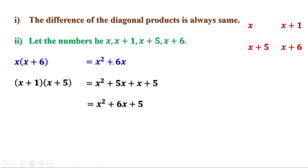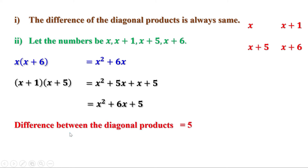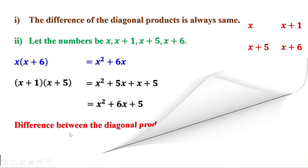Now look at these two expressions. This is x square plus 6x. This is x square plus 6x plus 5. Clearly, this is 5 more than this. That means x plus 1 into x plus 5 is 5 more than x into x plus 6. Therefore, the difference is always 5.